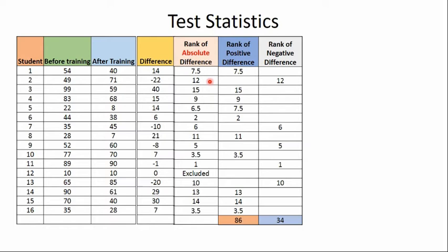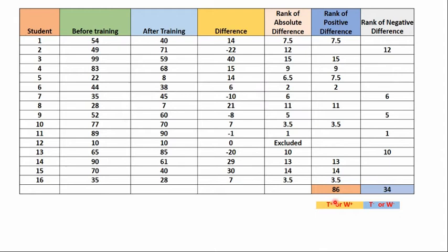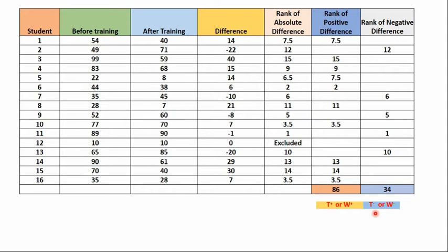Next step: rank of positive differences. We check each difference — if it is positive, we note its rank in the positive column; if it is negative, we note it in the rank of negative difference column. We take the sum totals: the total of ranks of positive differences is 86, and the total of ranks of negative differences is 34. These are called W-plus and W-minus respectively.